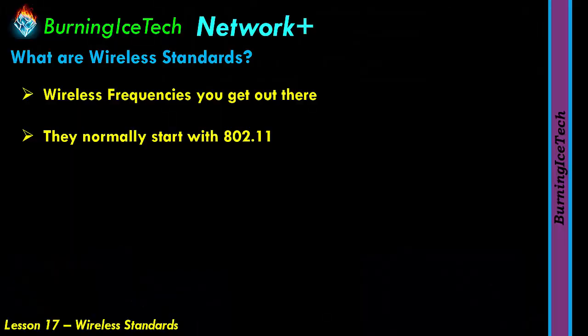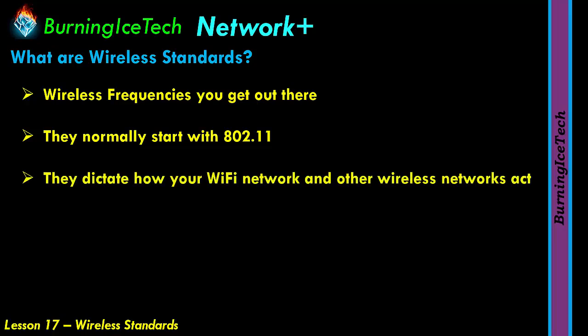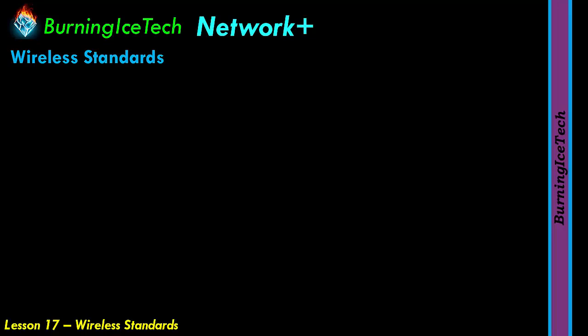Welcome back. Whenever we talk about a wireless frequency, it tends to start with the numbers 802.11 and then something after that. Whatever comes after the .11 normally tells us which frequency we're dealing with, indicated with a letter or two. So in a nutshell, wireless standards are a set of services and protocols that dictate how your Wi-Fi network and other wireless networks act. Let's start by listing some of the various wireless standards — the first one is 802.11a.